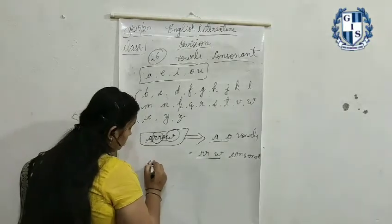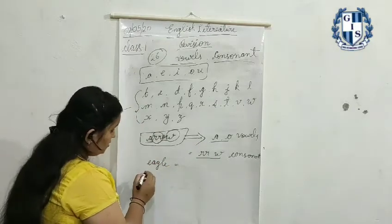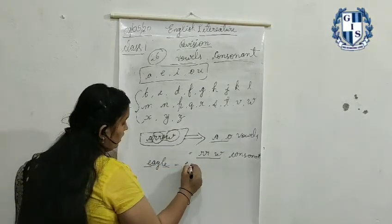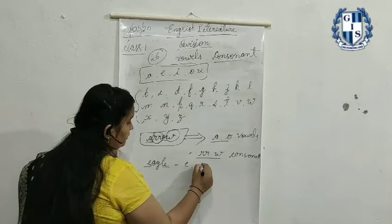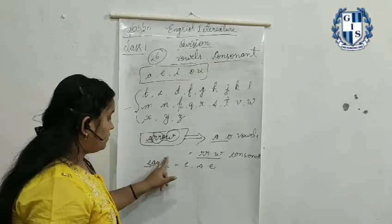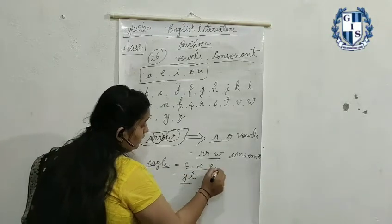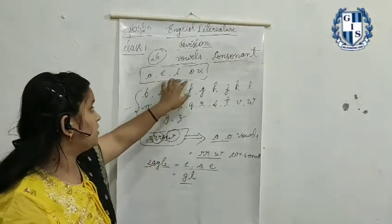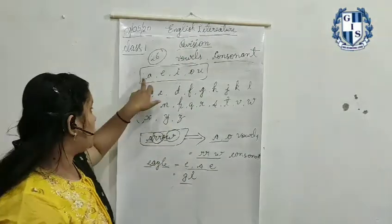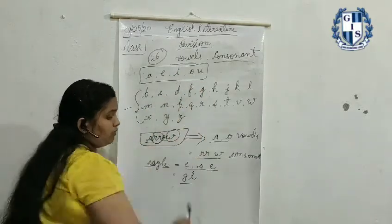Like 'eagle.' In 'eagle' there are three vowels: E, A, and E again. And the letters that are left are consonants, like G and L. It is very simple — you have to learn only five letters which are vowels: A, E, I, O, U. And those that are left are consonants.